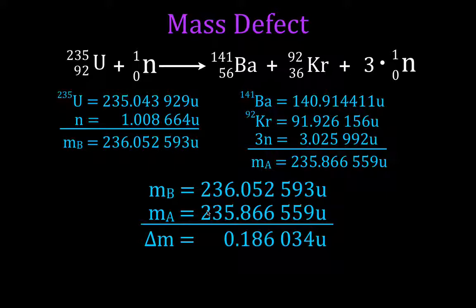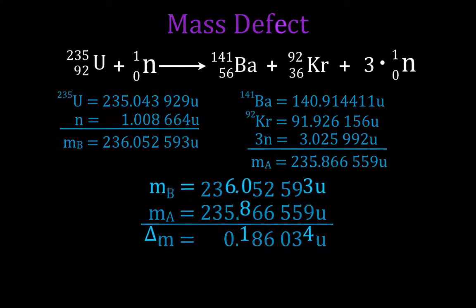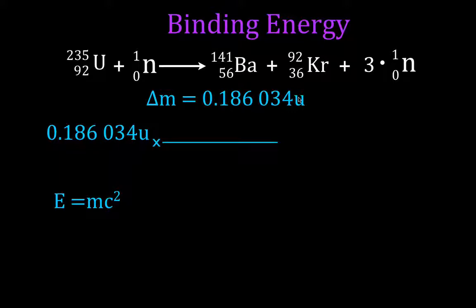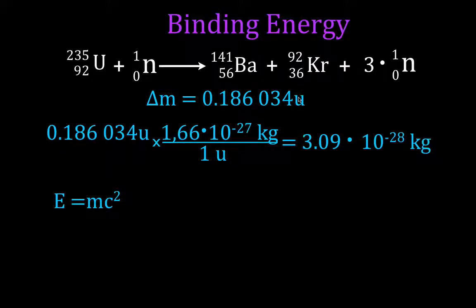That is the missing mass — and where did it go? That mass went into energy. So let's figure out how much binding energy we get from the fission of uranium-235. We're going to use Einstein's equation E = mc² to find the energy, but the mass must be in kilograms, not atomic mass units. We convert using 1 atomic mass unit = 1.66 × 10⁻²⁷ kilograms, which gives us a mass defect of 3.0 × 10⁻²⁸ kilograms.